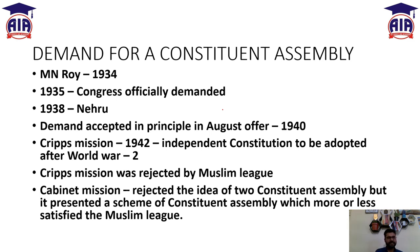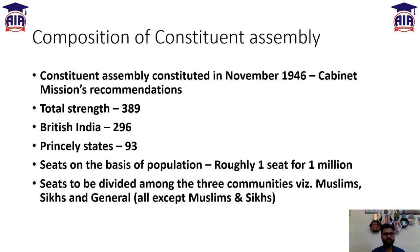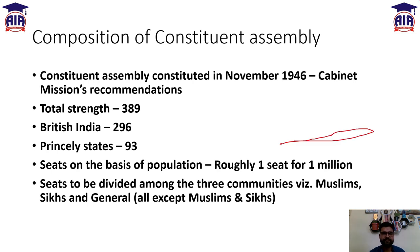The Muslim League rejected the Cripps Mission. Then came the Cabinet Mission, which rejected the idea of two Constituent Assemblies but presented a scheme of one Constituent Assembly that more or less satisfied the Muslim League. The Cabinet Mission said we will provide one kind of constitution acceptable to both Congress and the Muslim League. This led to the composition of the Constituent Assembly.